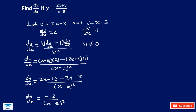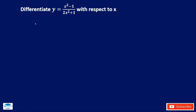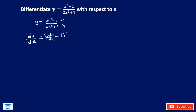Let's try and solve another example. Let the numerator be u and the denominator be v. The quotient rule gives dy/dx equal to v times du/dx minus u times dv/dx, all over v squared, where v is not equal to 0.